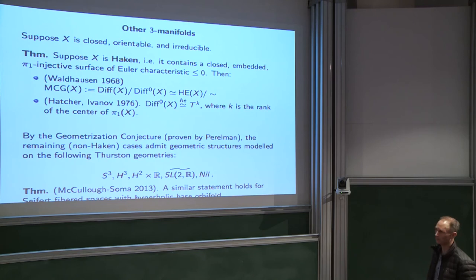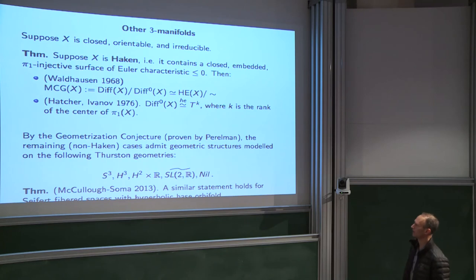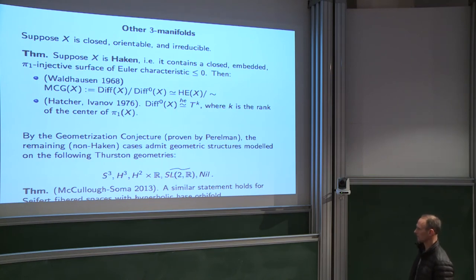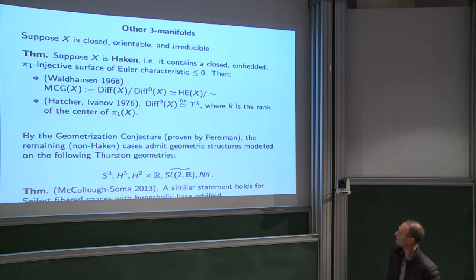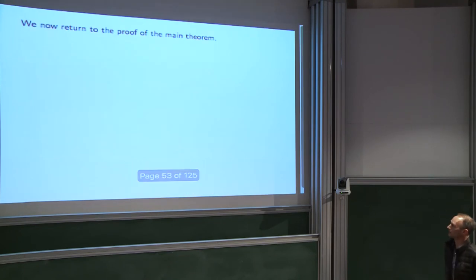After Perelman proved the geometrization conjecture, what remained was the non-Haken case. By geometrization, those are geometrizable manifolds admitting geometric structures modeled on one of the eight geometries. The last three Seifert-fibered geometries were handled in 2013 for the cases with hyperbolic base. That leaves only S³, H³, and Nil geometry. H³ was already handled. We've just finished off the spherical case, and the Ricci flow approach also gives a path to the final Nil case — which will complete the story.